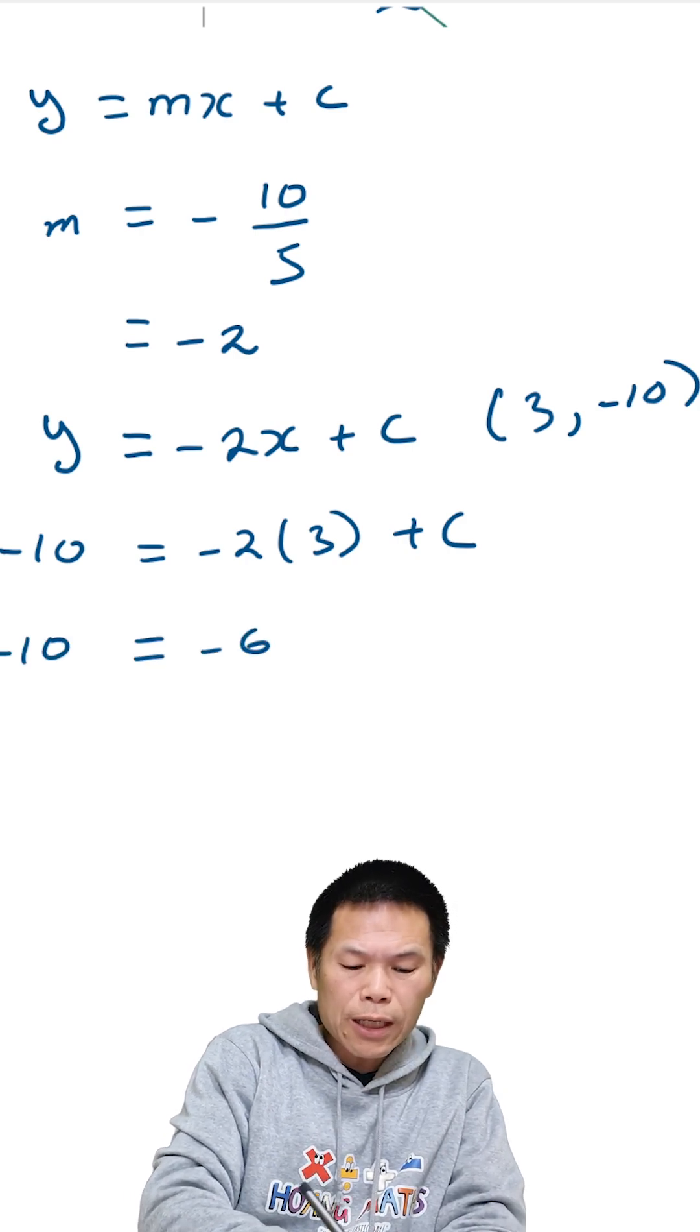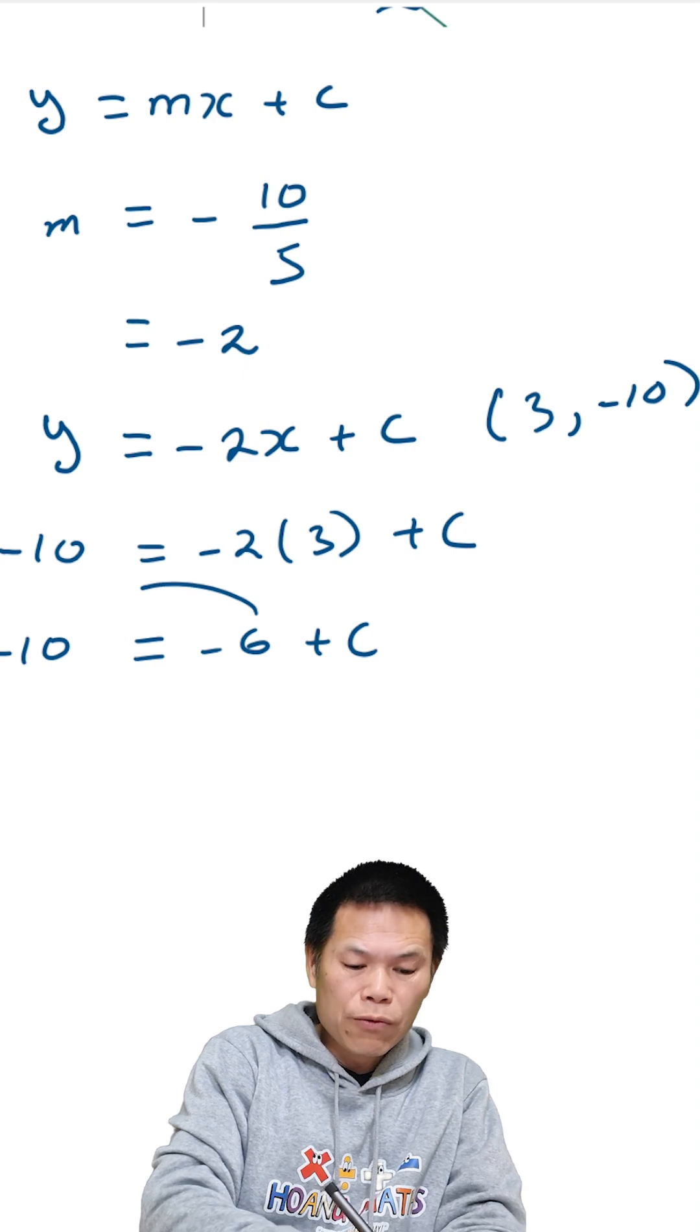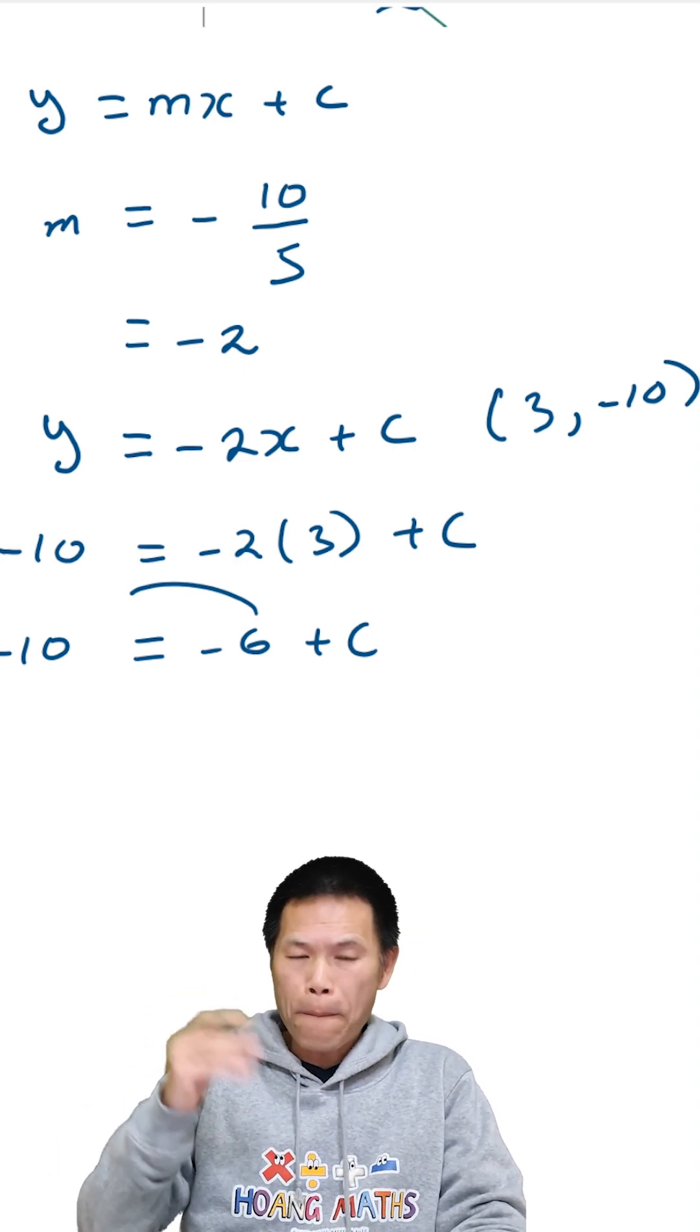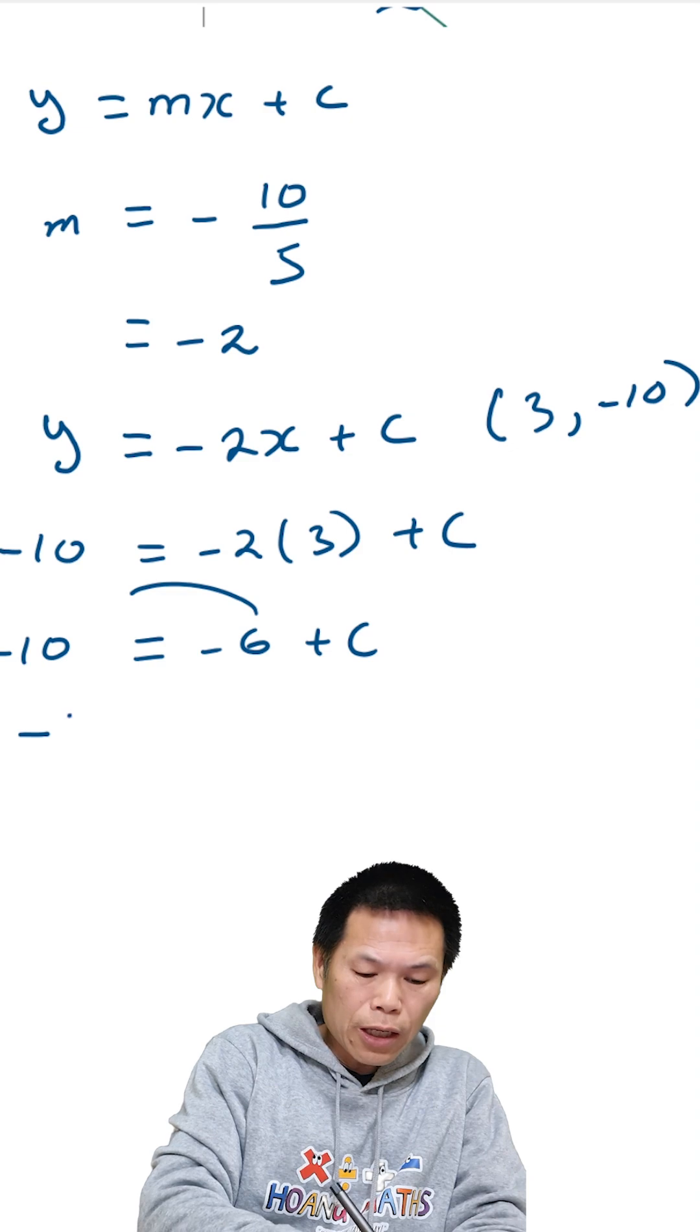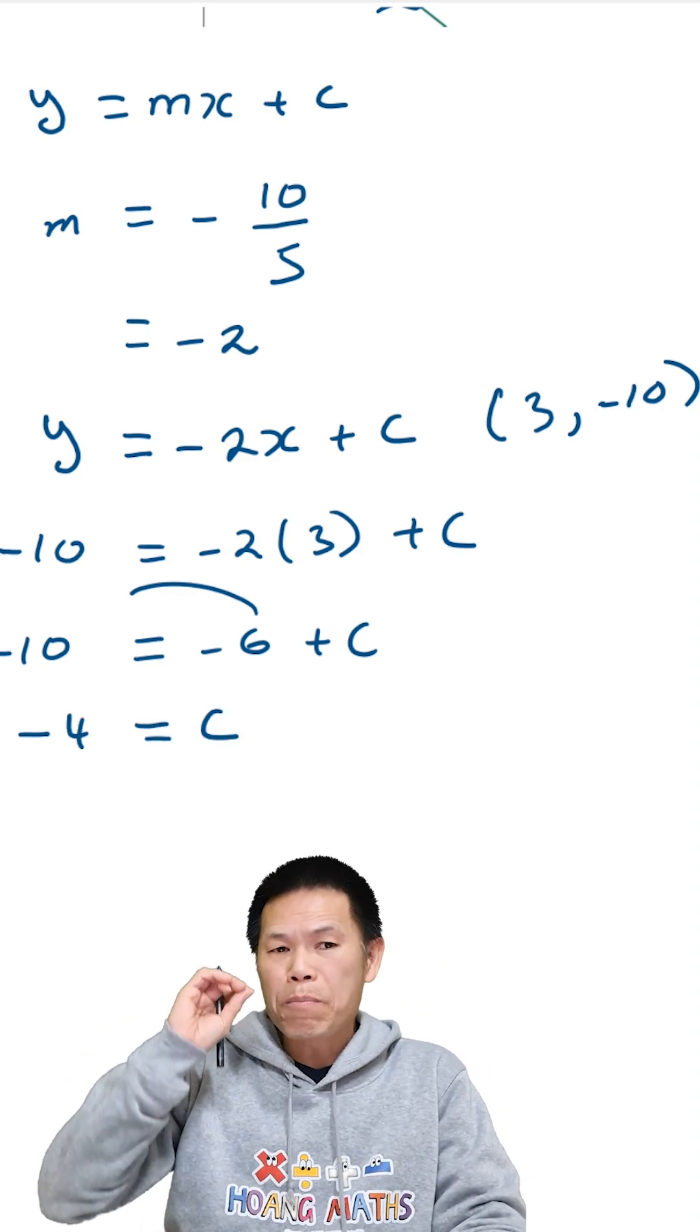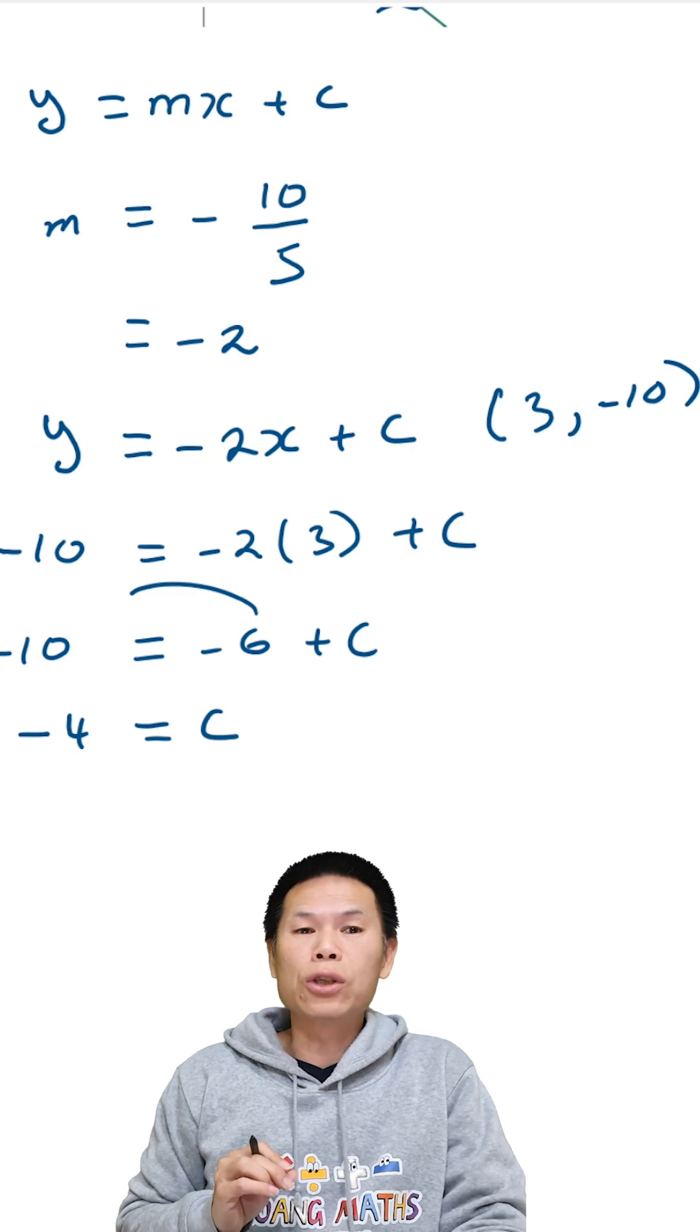Minus 10 equal to negative 6 plus c, and move on that side become plus 10 minus 6 is 4, but negative 4. The negative 4 becomes c. Otherwise, just put on a calculator minus 10 plus 6, so you'd get negative 4.